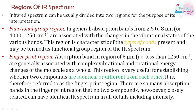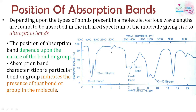There are two main regions. The first is the functional group region, with absorption bands from 4000 to 1250 cm⁻¹. This region is associated with changes in vibrational states and contains the characteristic absorption bands of functional groups. By examining this region, we can identify which functional groups are present in a molecule.